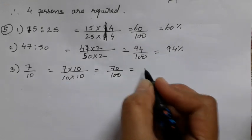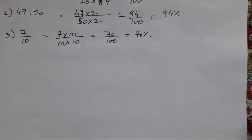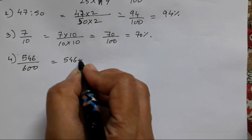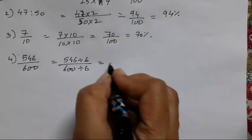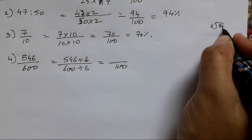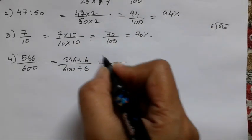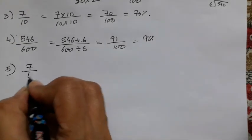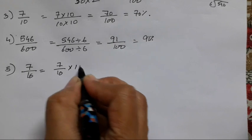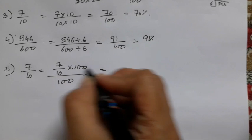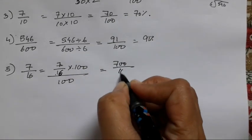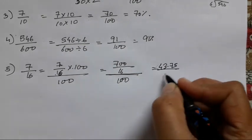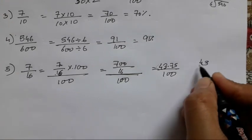Next is 546 upon 600. We need the denominator to be 100, so divide both by 6: 546 divided by 6 = 91, and 600 divided by 6 = 100. So the answer is 91%. The fifth one is 7 upon 16. Multiply by 100: 7 into 100 = 700 upon 16. Dividing 700 by 16 gives 43.75. So your answer is 43.75%.